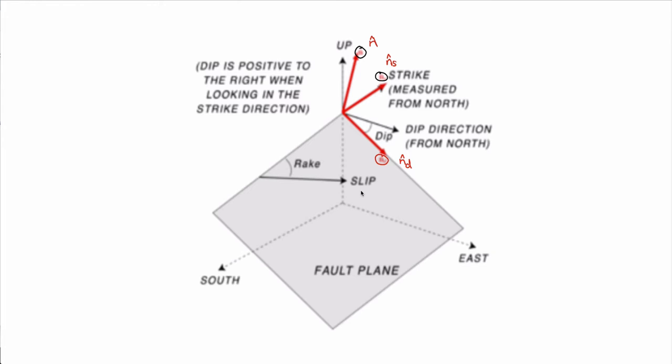Just like we transformed from the principal stress coordinate frame into the geographic coordinate frame, now we can go from the geographic coordinate frame into this new one — which is another transformation. But here we don't really need the full stress tensor in this coordinate frame. What we really just want to know is the normal and the shear stresses on the plane of the fault, because that's what determines if the fault will slip — the ratio of that. If the ratio of normal to shear stress is greater than the coefficient of friction, then the fault will slip.